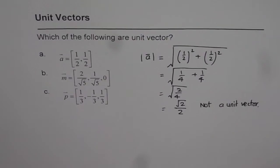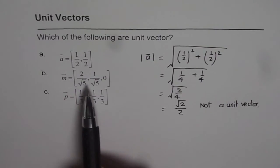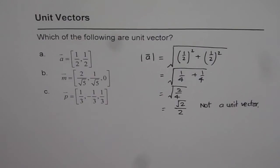You have to test for vectors B and C. Are they unit vectors or not? So they are XYZ components. So you do A square plus B square plus C square square root, and check if it is 1 or not.